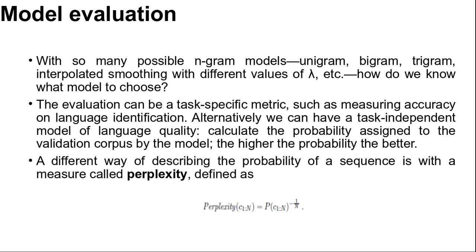With so many possible n-gram models — unigram, bigram, trigram, trigram with interpolated smoothing with different values of λ, etc. — how do we know which model to choose? We can evaluate a model with cross-validation: split the corpus into a training corpus and a validation corpus, determine the parameters of the model from the training data, then evaluate the model on the validation corpus. The evaluation can be a task-specific metric such as measuring accuracy on language identification, or alternatively a task-independent measure of language quality by calculating the probability assigned to the validation corpus by the model.